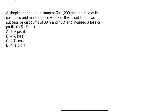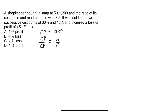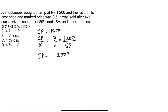Question 1: A shopkeeper bought a lamp for 1200 rupees, so cost price = 1200. The ratio of its cost price to marked price is 3:5, so cost price / selling price = 3/5. With cost price = 1200, we get selling price = 2000. The lamp was then sold after two successive discounts of 30% and 18%, incurring either a loss or profit of x%. Find x.